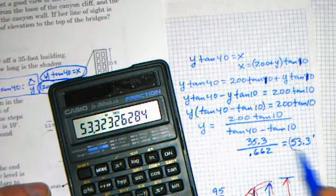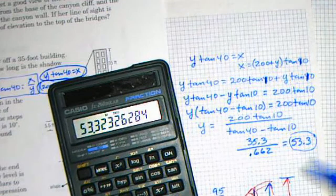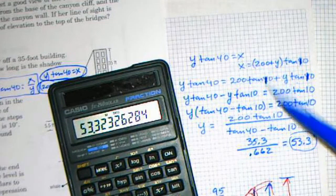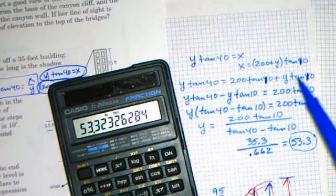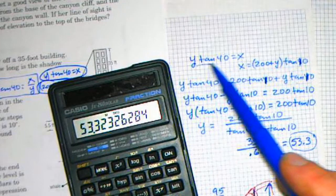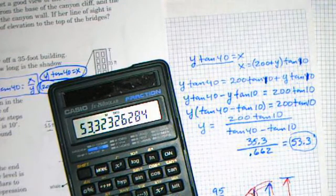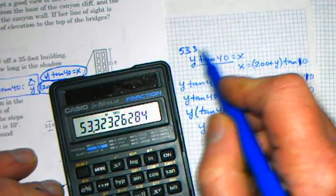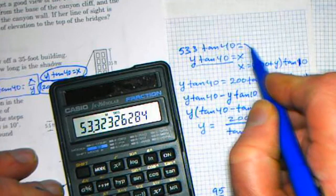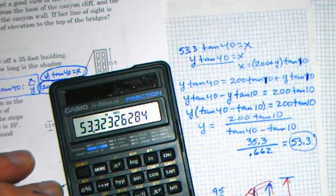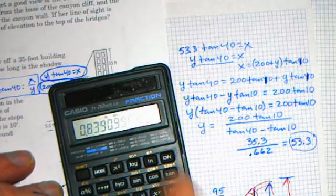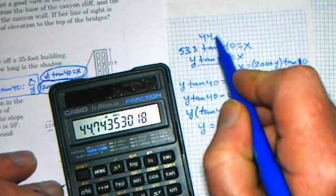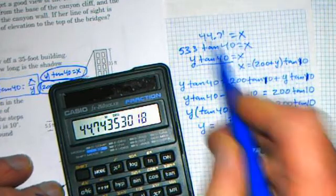Now that we've got what y is equal to, it's like a regular substitution problem. We're going to go back to one of our original expressions and put 53.3 in for y in either one. Usually the easiest one would be the one that just has the single y without having the parentheses. So I'm going to replace this y with 53.3. So 53.3 times tan 40 is equal to x. We've got 53.3 times tangent 40 equals 44.7. So we've got x is 44.7.